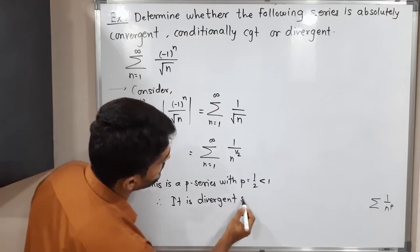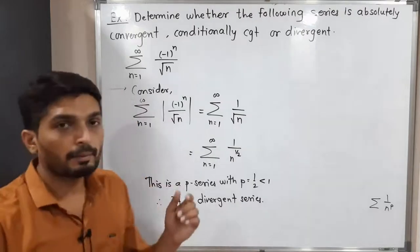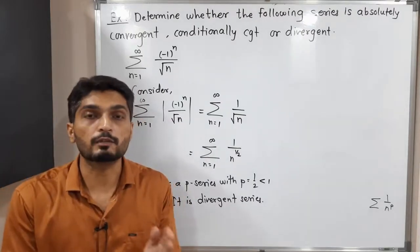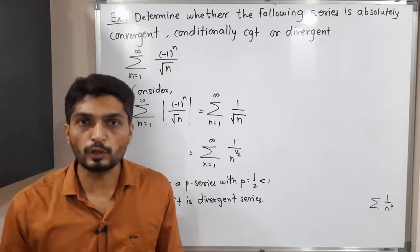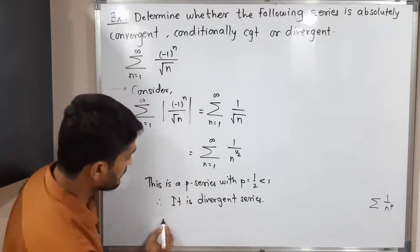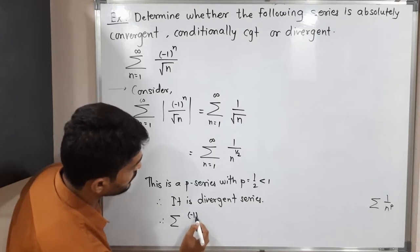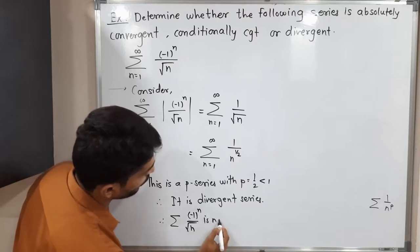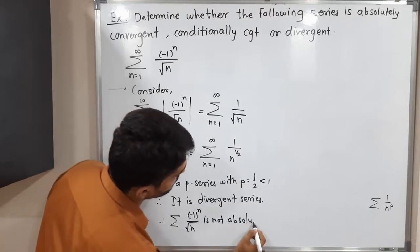Since applying modulus gives a divergent series, the given series is not absolutely convergent. Therefore, Σ(-1)^n / √n is not an absolutely convergent series.